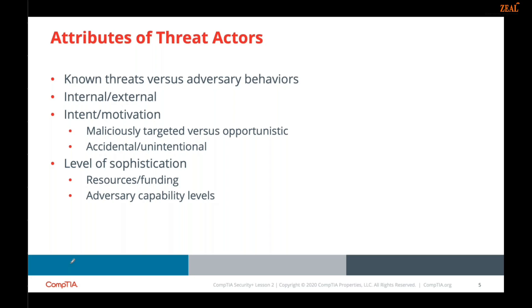When it comes to location, the threat actor or attacker can be internal or external. An internal threat — the insider threat — is someone who has been granted permissions on the system, maybe an employee of the organization, but insider threats can also arise from contractors or business partners. An external threat actor is one that has no account or authorized access to the target system, and must infiltrate through malware or social engineering.